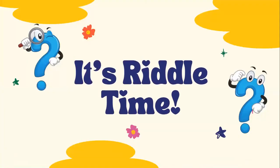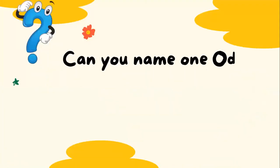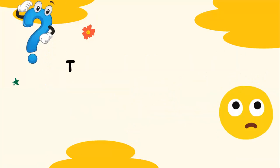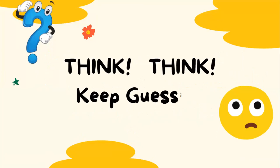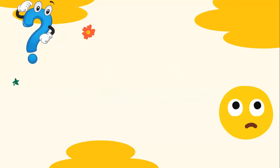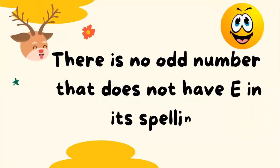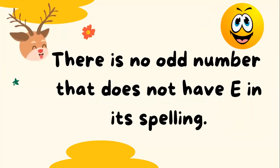It's riddle time! Can you name one odd number that does not have an E in its spelling? The answer: there is no odd number that does not have an E in its spelling!